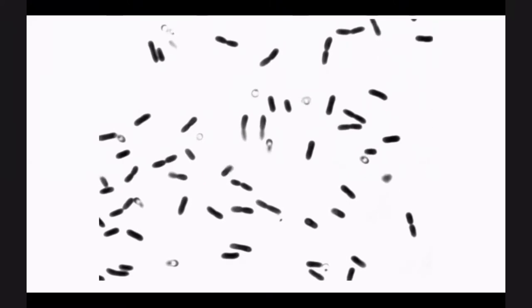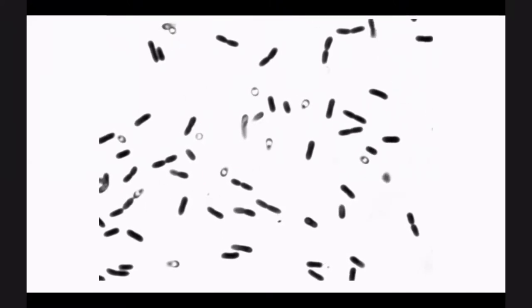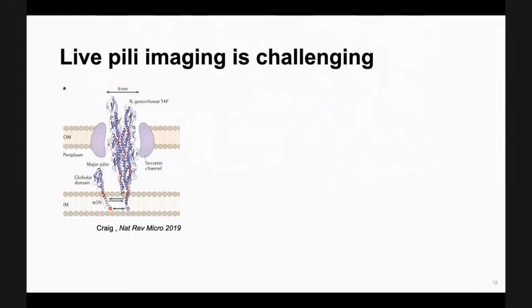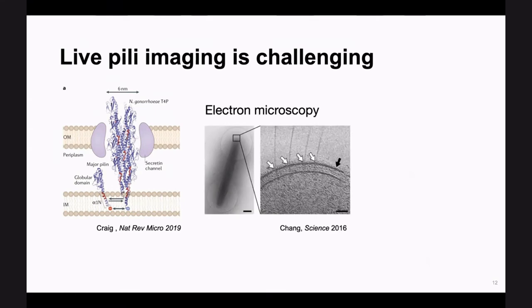The flagellum is much more well-known — the cells are swimming, we know they have it, but we can't see it. Why is that? The simple answer is that they're too small to be seen with a regular microscopy modality — about six nanometers in width. At the same time, they are being extruded very close to the surface, so maybe the signal from the cell body is overwhelming, preventing us from visualizing them.